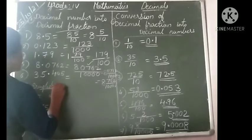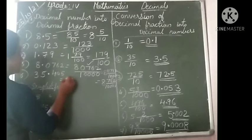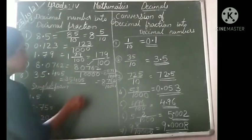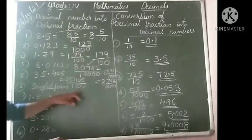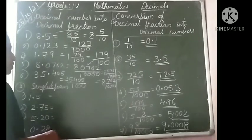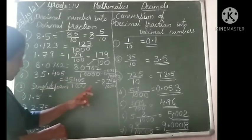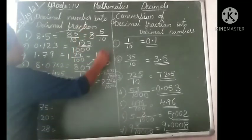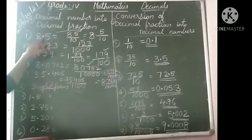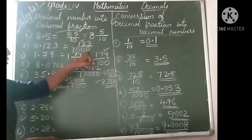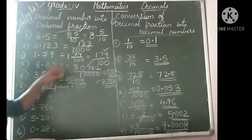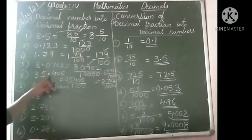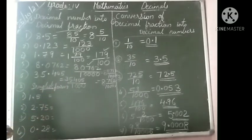Next: 35.406. We can write the digits together: 35406, and the point is after 3 decimal places, so the denominator is 1000. Answer: 35406 divided by 1000. If writing as a mixed fraction: 35 and 406 by 1000. In summary: according to the number of decimal places, choose the denominator — 1 decimal place means divide by 10, 2 places by 100, 3 places by 1000, 4 places by 10,000.